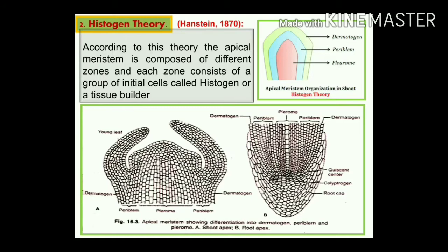The second theory is the histogen theory, proposed by Hanstein in 1870. According to this theory, the apical meristem is composed of different zones and each zone consists of a group of initial cells called histogen, or tissue builder. According to Hanstein, the root apex is distinguished into three meristematic regions or three layers of histogen: dermatogen, periblem, and pleurome.